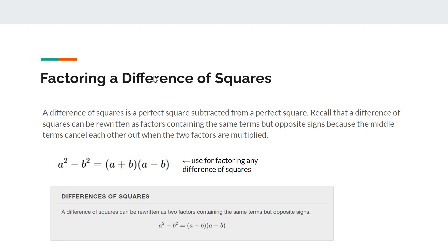Factoring a difference of squares. A difference of squares is a perfect square subtracted from a perfect square. A difference of squares can be rewritten as factors containing the same terms with opposite signs, because the middle terms cancel each other out when the two factors are multiplied. So a squared minus b squared is the same as a plus b times a minus b. We can check this using the FOIL method: a times a is a squared, a times negative b is negative ab, positive ab cancels that out, and then negative b squared.